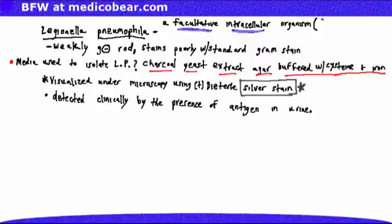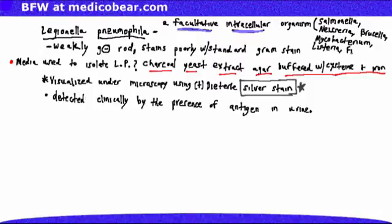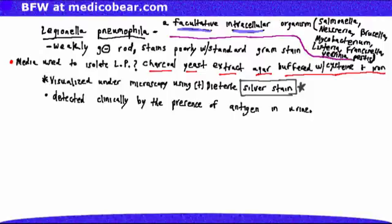Examples include Salmonella, Neisseria, Brucella, Mycobacterium, Listeria, Francisella, and also Yersinia pestis. Legionella pneumophila is certainly not alone. There are a lot of other organisms that are also facultative intracellular.